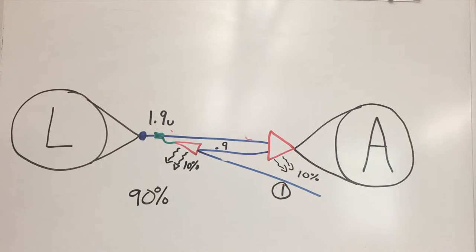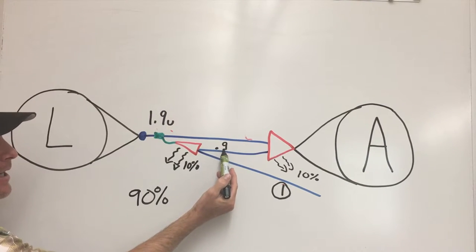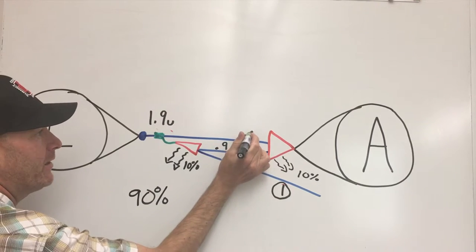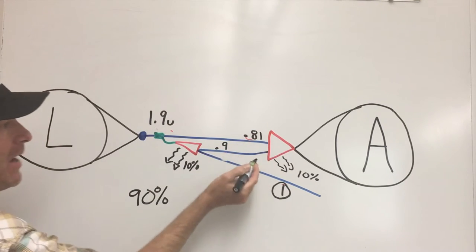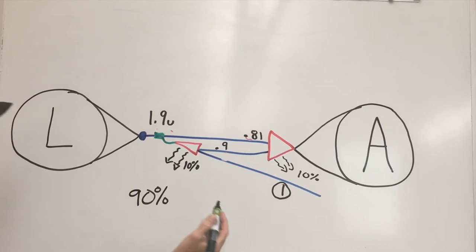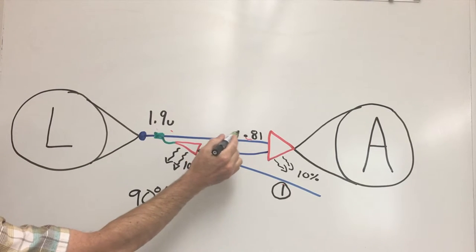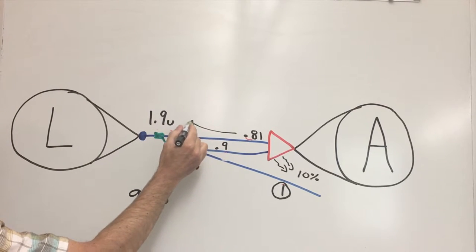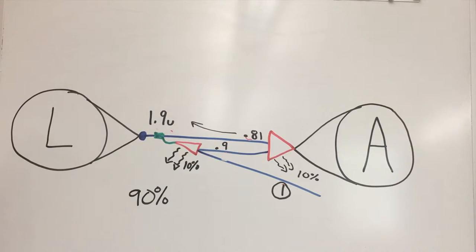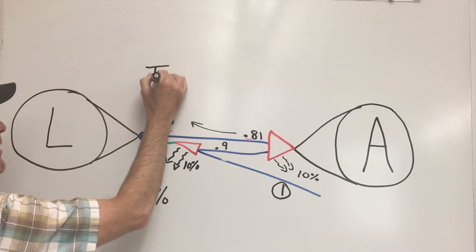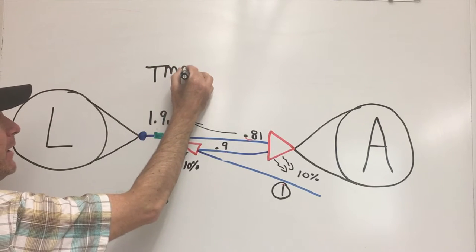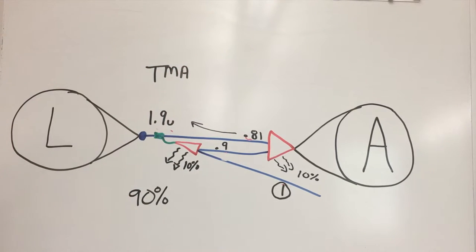Due to friction and heat and vibrations, we'd have to take 10 percent of 0.9, so we're going to get a 0.81 output on the other side. This 0.81 will travel down to our 1.9, so we'll be adding those together now for our theoretical mechanical advantage.